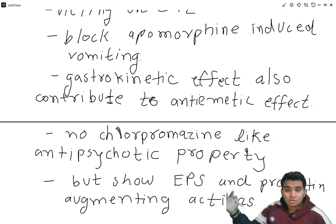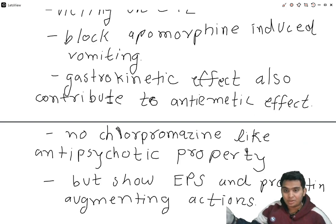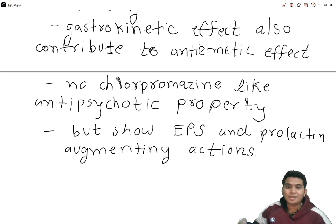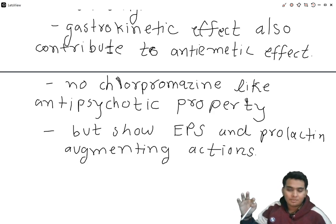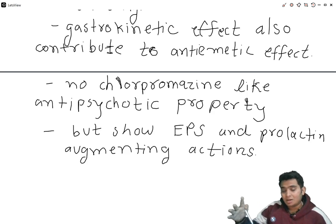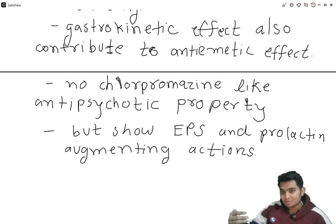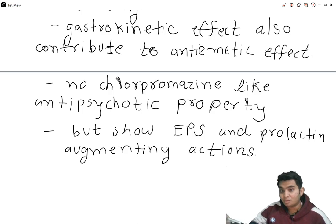Metoclopramide has no chlorpromazine-like anti-psychotic property, but it does produce extrapyramidal symptoms and prolactin-augmenting actions, which will be discussed subsequently in the mechanism of action.